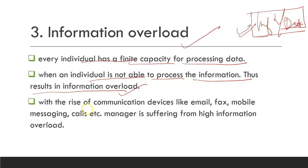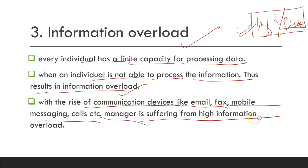With the rise of communication devices like email, fax, mobile messaging, and calling, managers are suffering with high information overload. For the same thing, you get an email, a fax, a call, and a message. Remembering and updating everything is very difficult. That is why today in organizations, managers face a lot of problems in terms of information overload because they are not able to process all the information. This is called the third barrier of communication.